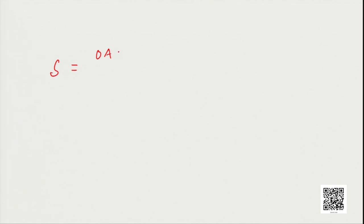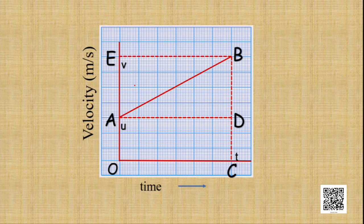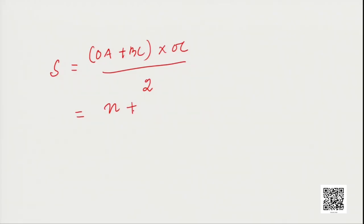The formula for the area of the trapezium is: OA plus BC, multiplied by OC, divided by 2. OA plus BC are the parallel sides, and OC is the base. Substituting: OA is the initial velocity U, BC is the final velocity V, and OC is the time T. So S equals U plus V multiplied by T, divided by 2.